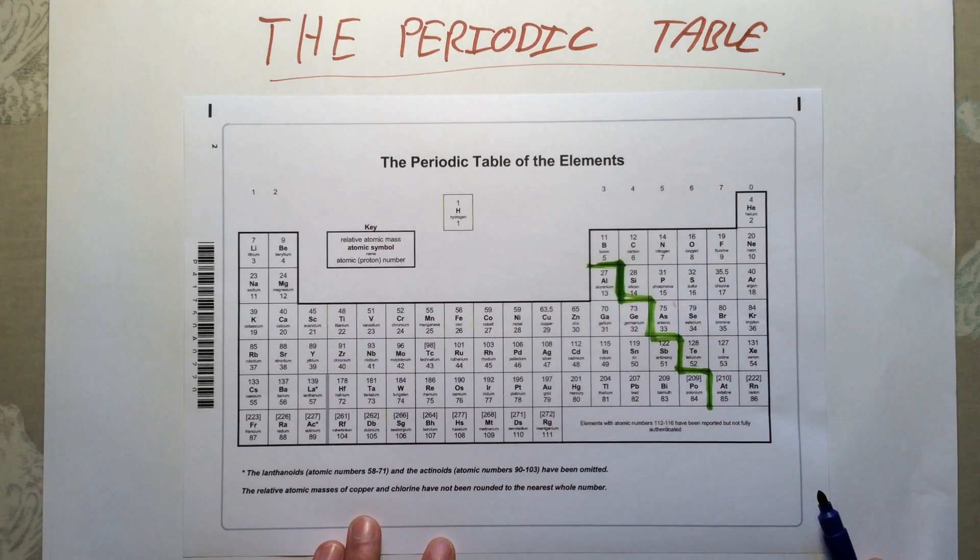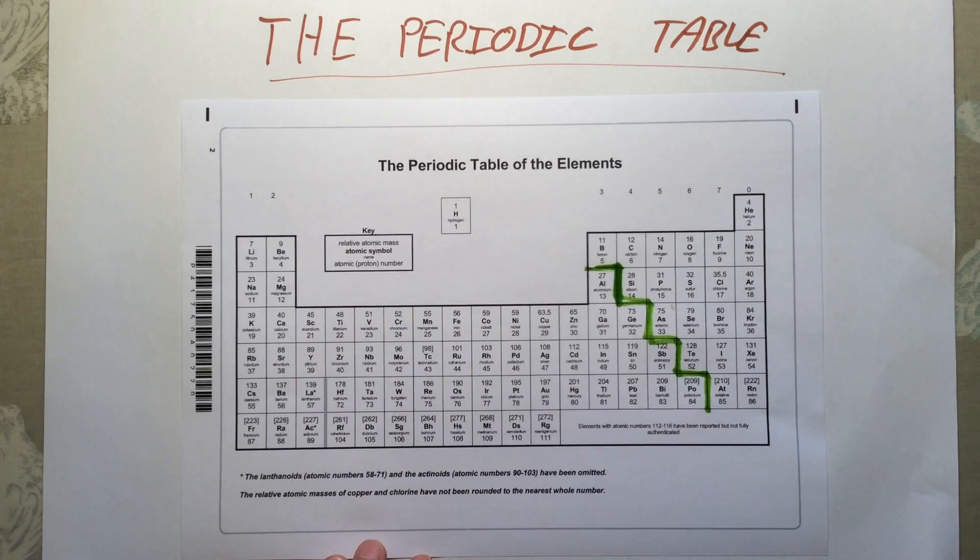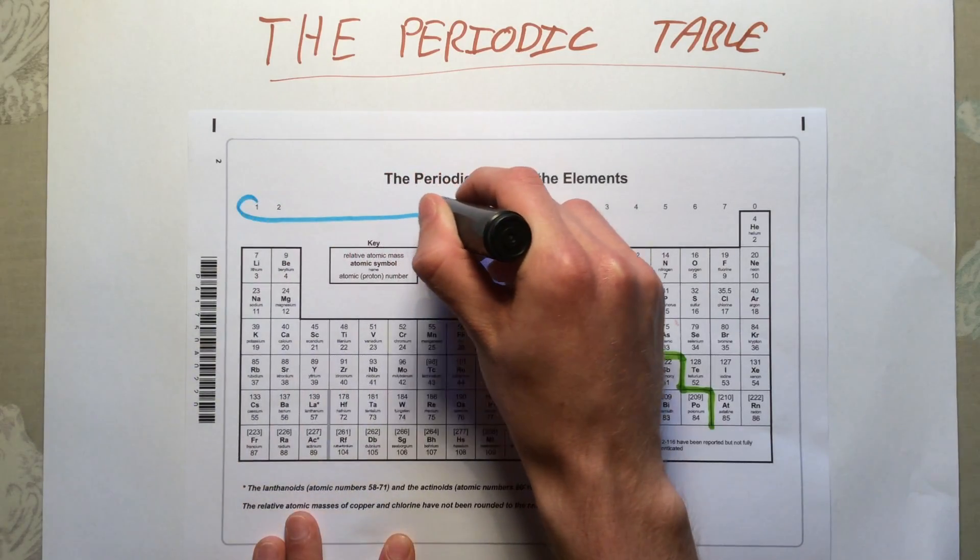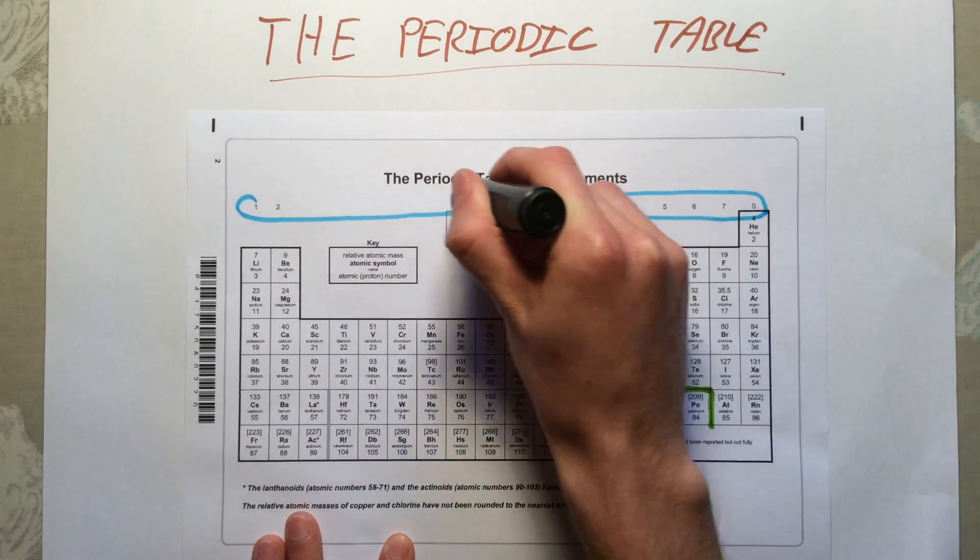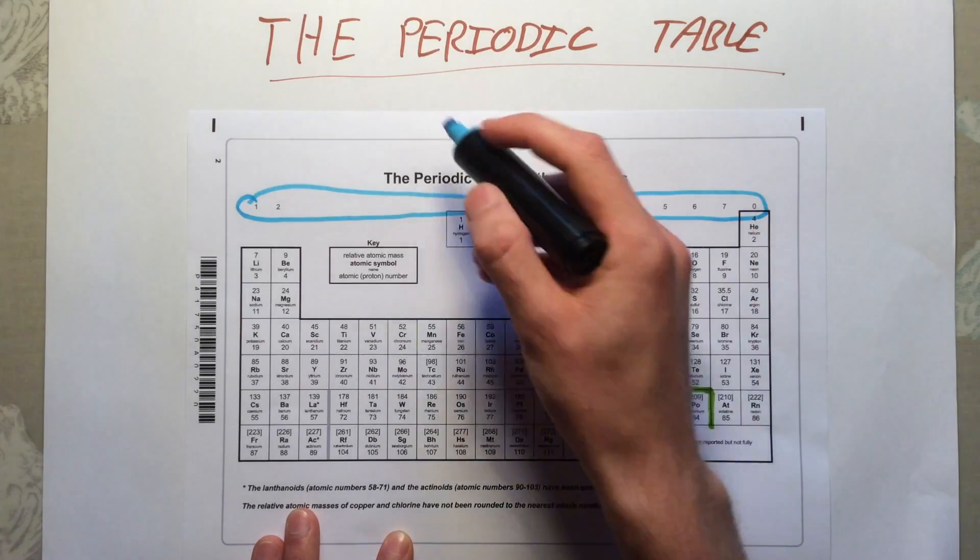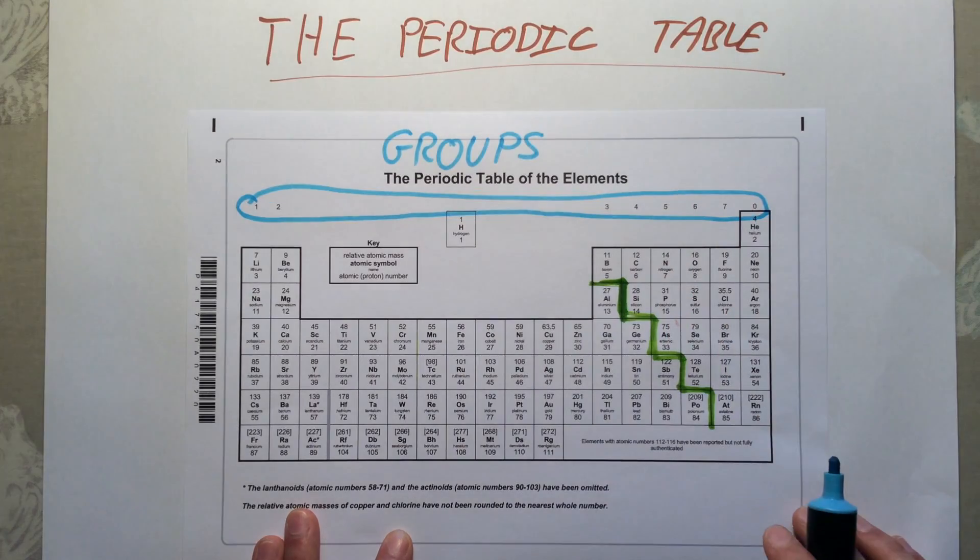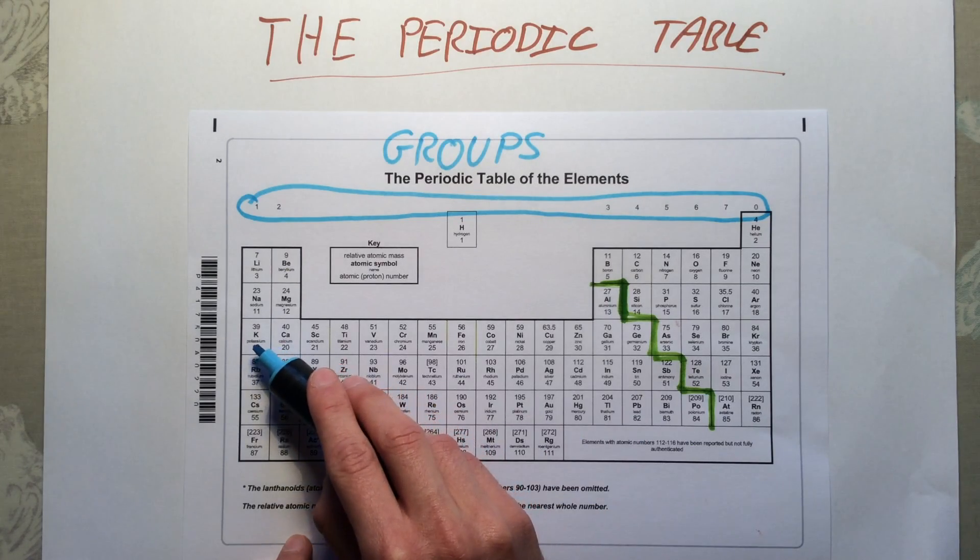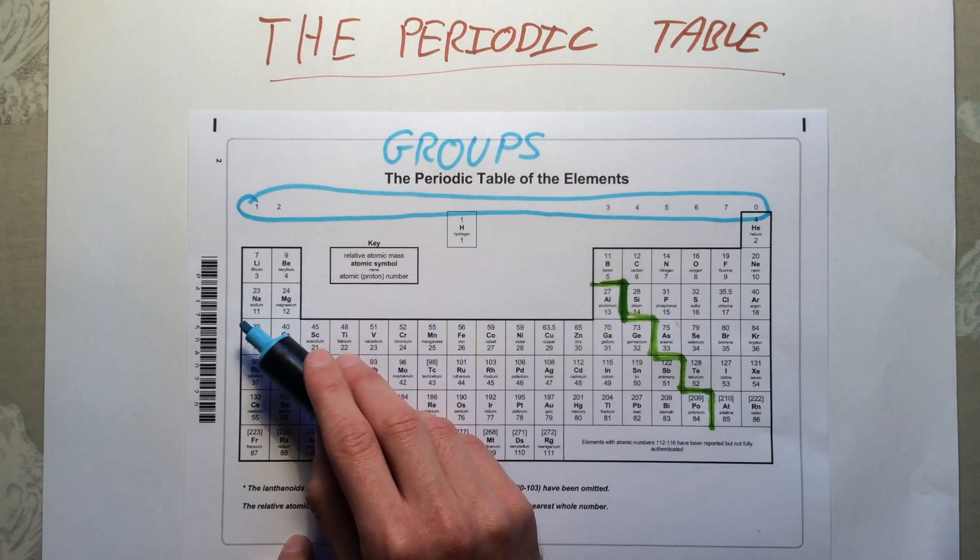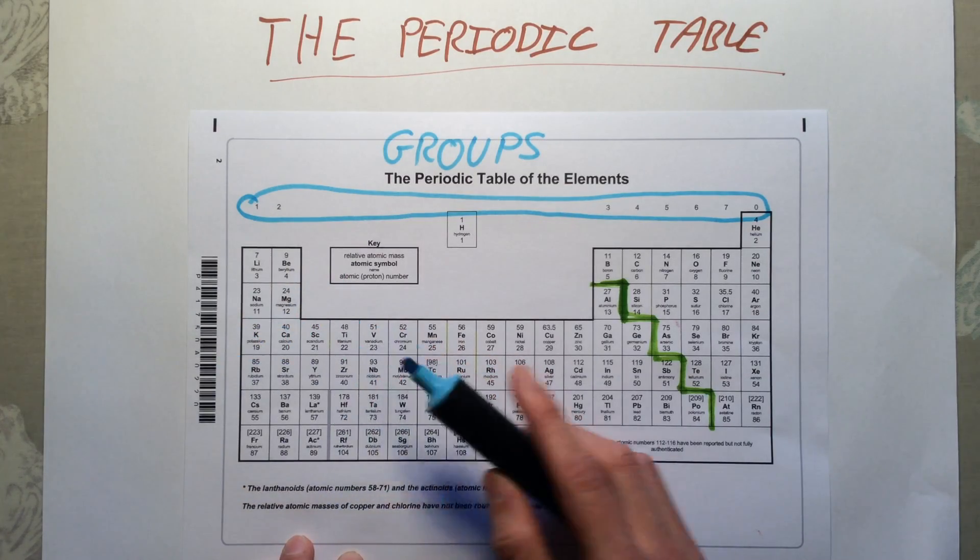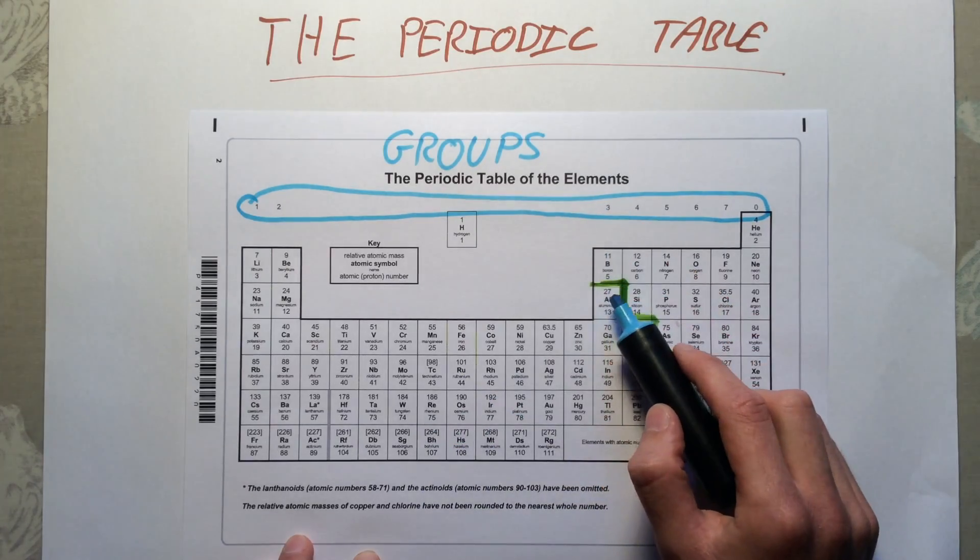The second thing we need to know is what we call these numbers going along the top here. First thing to note is that it actually goes one, two, big gap, three, four, five, six, seven, zero. These are the groups of the periodic table. They tell us a lot about the different elements. At its most basic level, it tells us or gives us an idea about how the elements are going to react. For example, because potassium is in the same group as sodium, we make predictions that they're going to react in a similar way. It also very importantly tells us how many electrons are in that element's outer shell. For example, aluminum is in group three, therefore it is going to have three electrons in its outer shell.